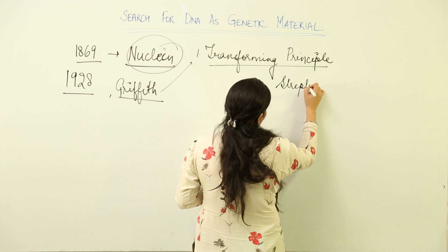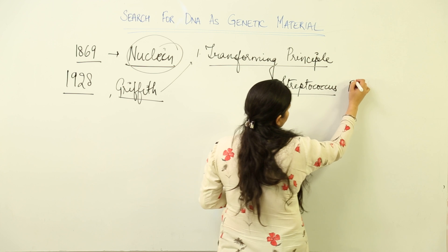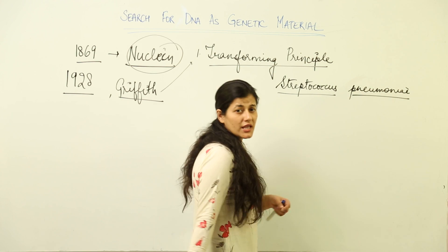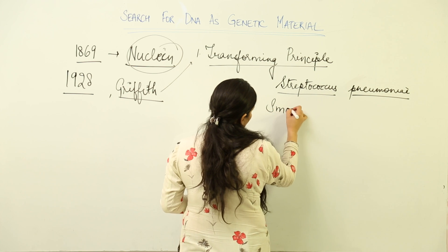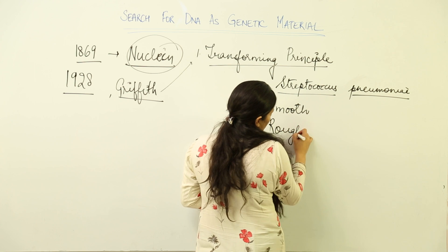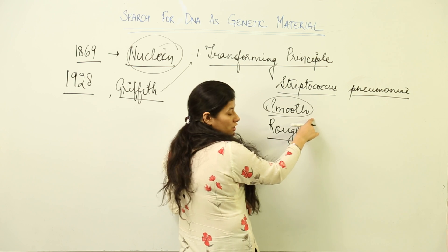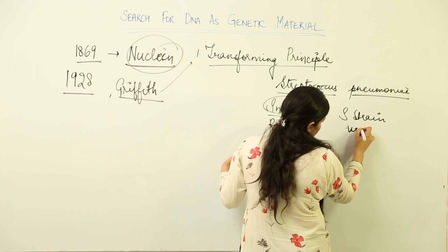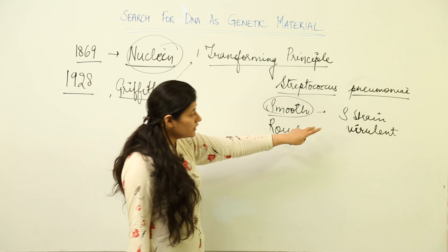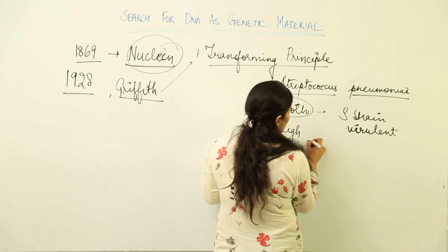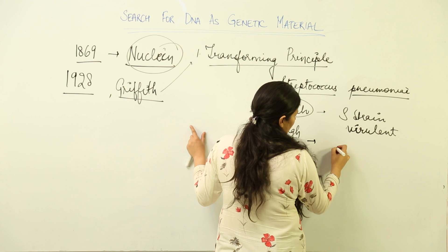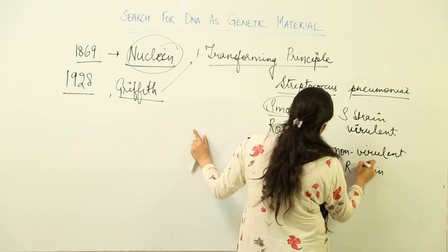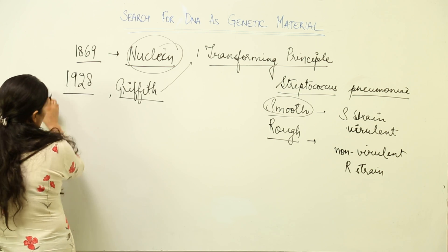The experiment was carried out using bacterial colonies of Streptococcus pneumoniae, also called pneumococcus. It has two types of colonies: smooth strain (S strain) and rough strain (R strain). S strain has a polysaccharide mucus coat, making it virulent — it kills the infected host. R strain lacks this mucus polysaccharide layer, has a rough colony appearance, and is non-virulent.